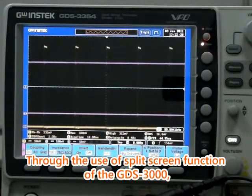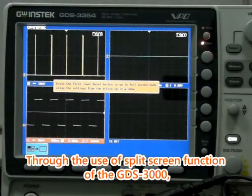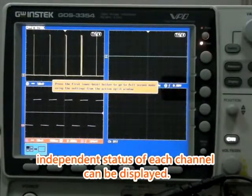Through the use of split screen function of the GDS-3000, independent status of each channel can be displayed.